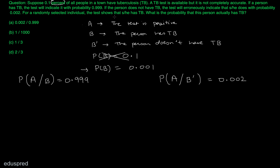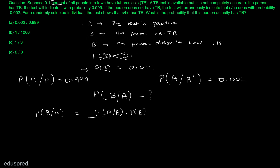For a randomly selected individual, the test shows that he has TB. What is the probability that this person actually has TB? We need to find the probability of B given A. Now we use Bayes' rule: probability of B given A equals probability of A given B multiplied by probability of B, divided by probability of A given B times probability of B, plus probability of A given B complement times probability of B complement.